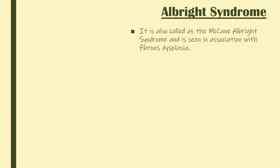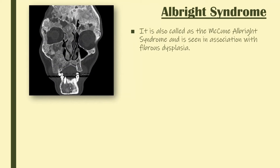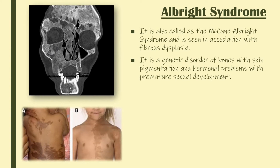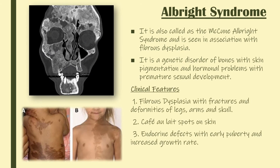Another syndrome is the Albright Syndrome, also called the McCune-Albright Syndrome, seen in association with fibrous dysplasia. It is a genetic disorder of bones with skin pigmentation and hormonal problems with premature sexual development. Clinical features include fibrous dysplasia with fractures and deformities of legs, arms, and skull; cafe-au-lait spots on skin; and endocrine defects with early puberty and increased growth rate.